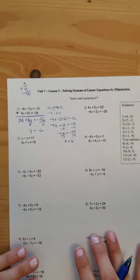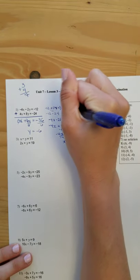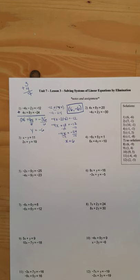Okay, x is 6, y is negative 6. So we always write it in the form of the coordinate point. There we go.